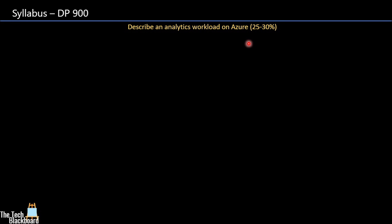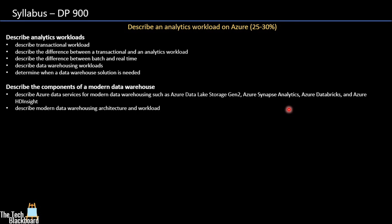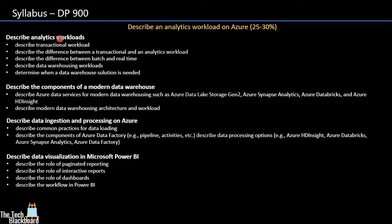The fourth area is 'Describe an Analytics Workload on Azure,' also 25 to 30 percent weightage. It has four subsections: Describe Analytics Workload, Describe the Components of a Modern Data Warehouse, Describe Data Ingestion and Processing on Azure, and Describe Data Visualization in Microsoft Power BI. Important topics include transactional vs. analytical workloads, batch vs. real-time data, data warehousing workloads, modern data warehousing architecture, and Azure Data Factory. Typically only one or two questions come from the Power BI section.